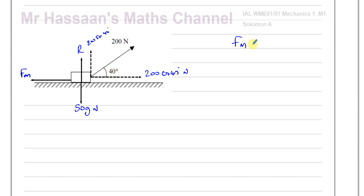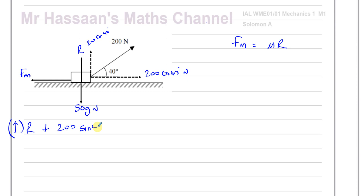We're trying to find the coefficient of friction. We know that F_max = μR, so if we can find F_max and R, we can find μ. Let's start with R, found by resolving the forces vertically. A common mistake is to say R equals the weight, but in this case there's also the component of the rope force acting upward. So: R + 200 sin 40 = 50g, giving R = 50g − 200 sin 40. I'll leave it in exact form for now.